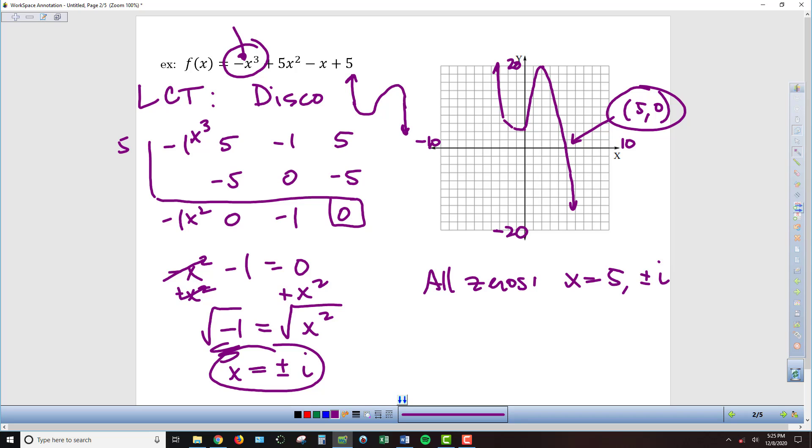And then to go along with that, we've got two others, plus or minus i. We always end up with as many zeros as we have the highest exponent. We've got 3 as the highest exponent, the one real zero here, and then the two imaginary zeros, plus or minus i.